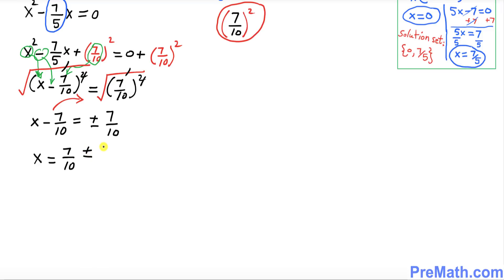Now I want you to split these positive and negative signs up. So we're gonna have 7/10 plus 7/10, and the other side is 7/10 minus 7/10.